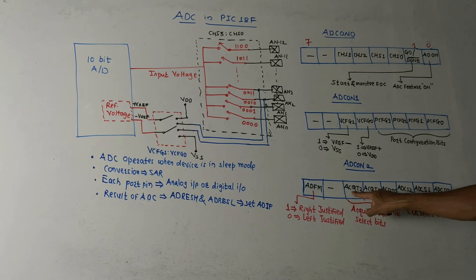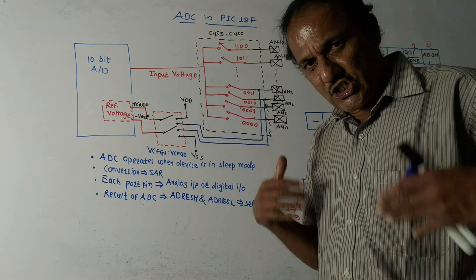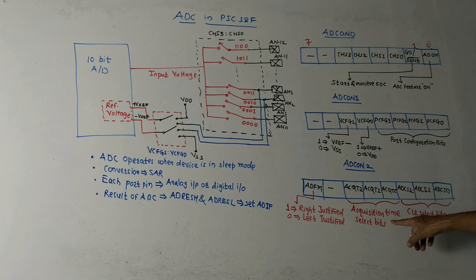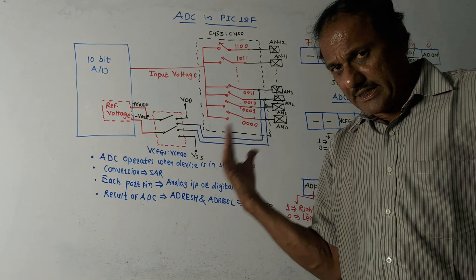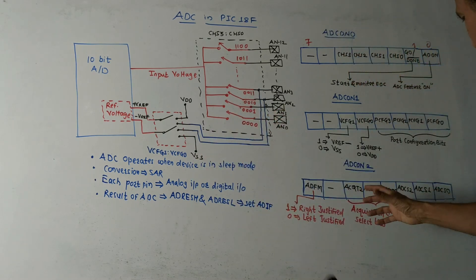Then these bits, ACQT2, ACQT1, and ACQT0, are used as acquisition time select bits. So accordingly, by choosing different contents of these bits, the acquisition time can be controlled or can be adjusted.